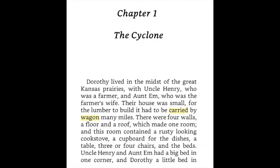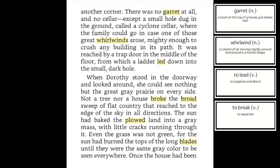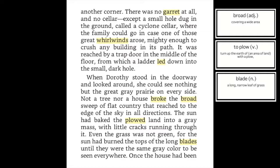Uncle Henry and Aunt Em had a big bed in one corner, and Dorothy a little bed in another corner. There was no garret at all, and no cellar except a small hole dug in the ground called a cyclone cellar, where the family could go in case one of those great whirlwinds arose mighty enough to crush any building in its path. It was reached by a trap door in the middle of the floor, from which a ladder led down into the small dark hole.